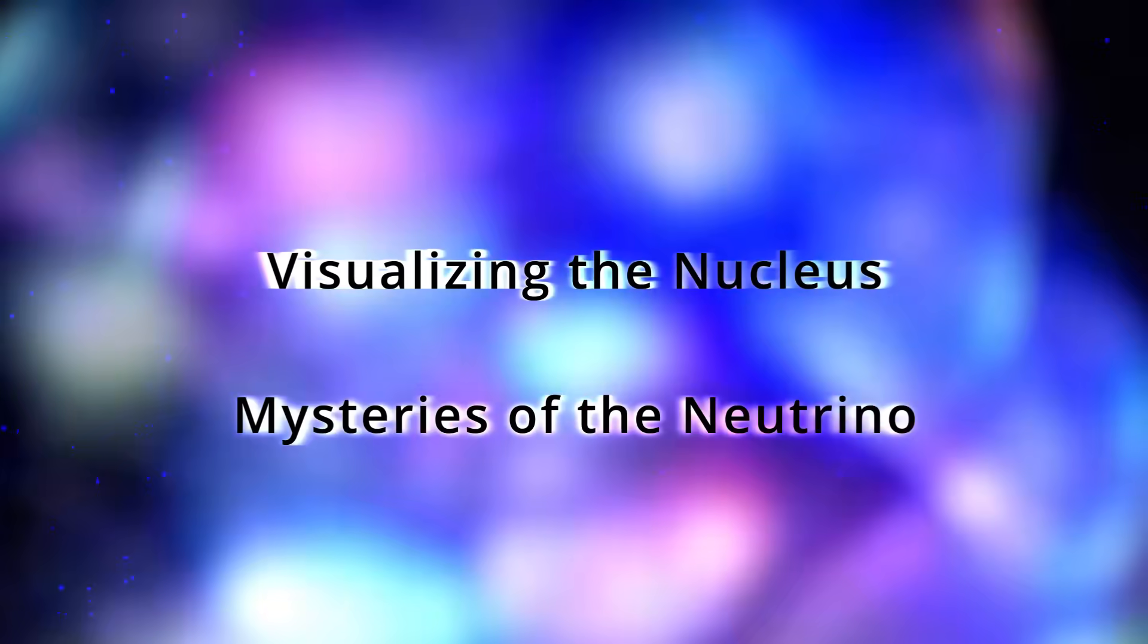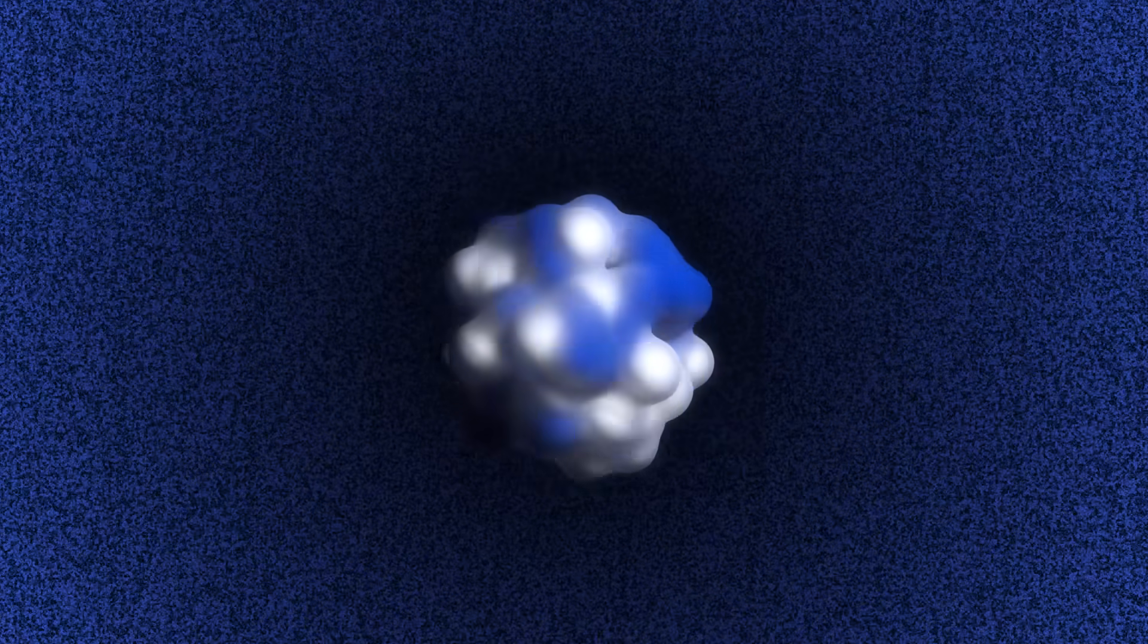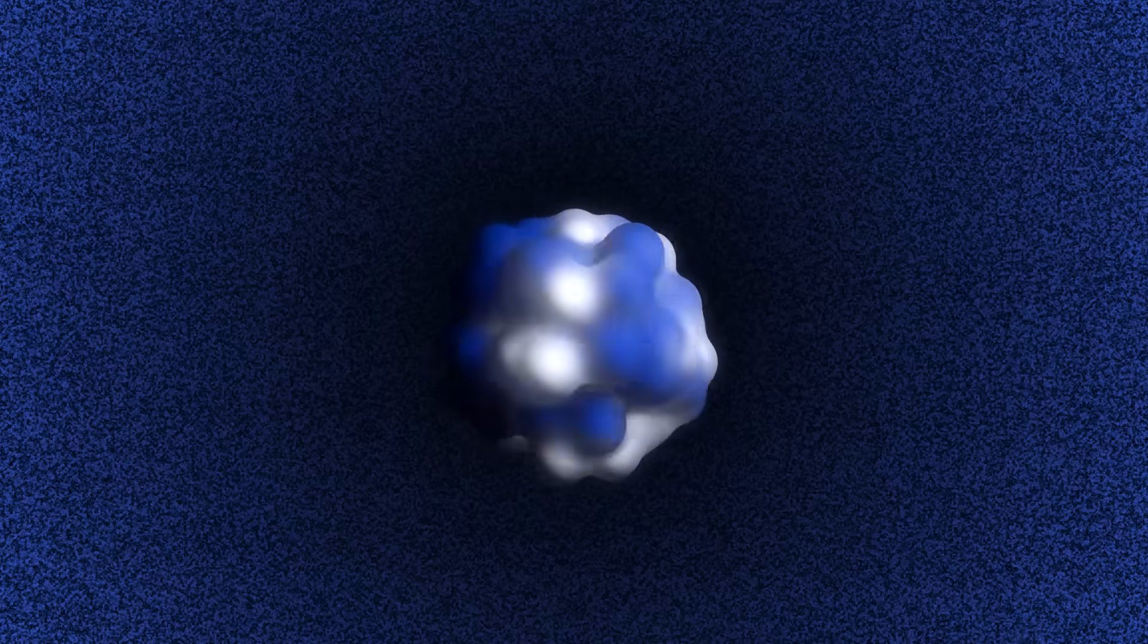Neutrinos play an important role in atomic nuclei. They appear as byproducts in one of the most common nuclear processes encountered in nature, beta decay.